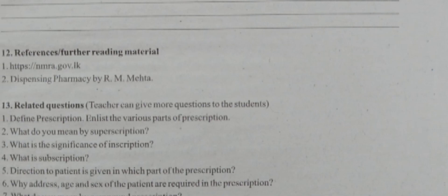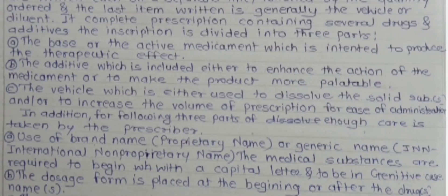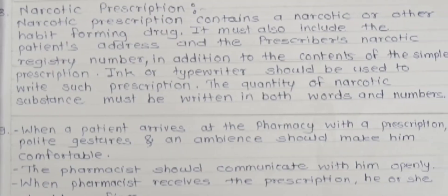Sixth question: why are address, age, and sex of the patient required in the prescription? These are the most important parts of the prescription because they help identify the patient, and for further references, having the full name, address, and details will be more useful.